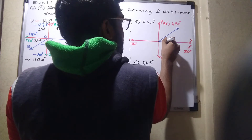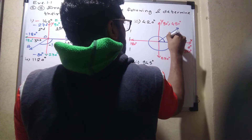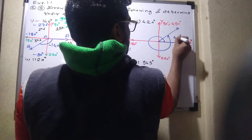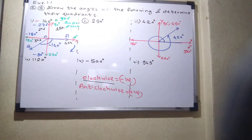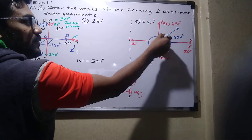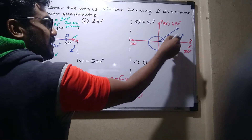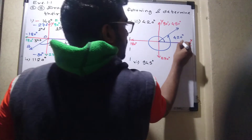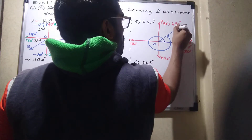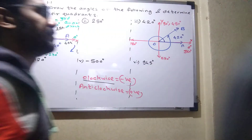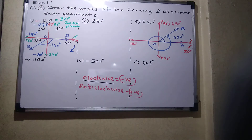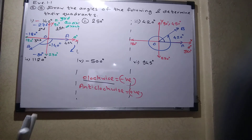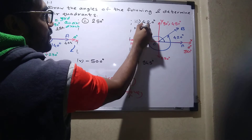The complete circle is represented, and the angle goes a bit further into the next rotation. The angle AOB for 420 degrees — which quadrant does it fall in? First quadrant. Very good, it's the first quadrant.